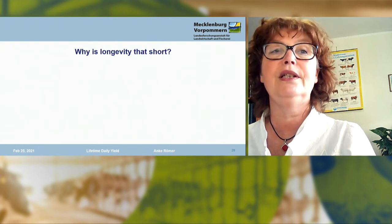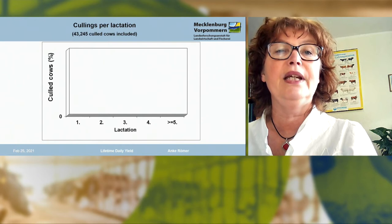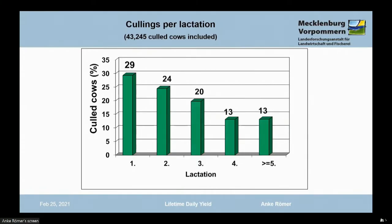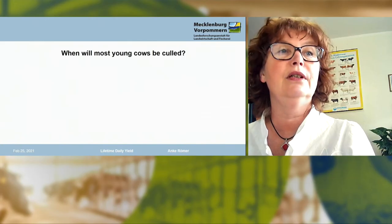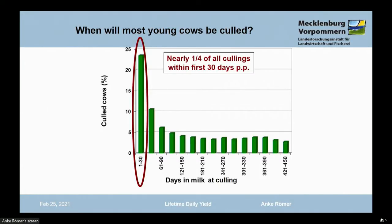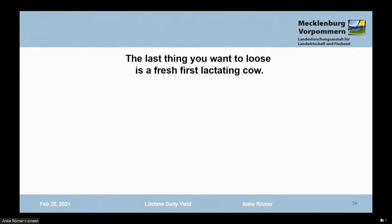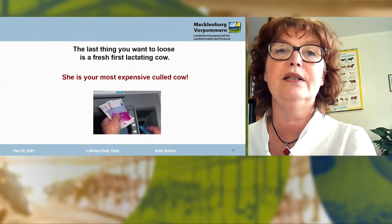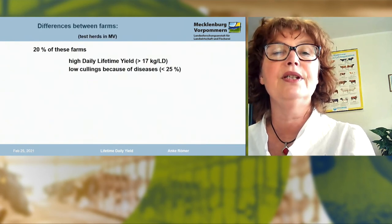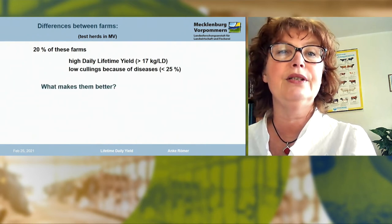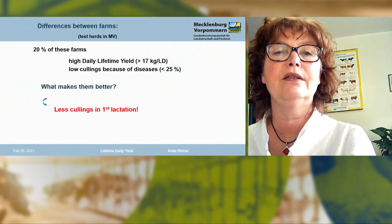But why is longevity so short? We calculated percentages of culled cows per lactation without sales. Surprisingly, most culled cows were first-lactating cows. Nearly 25% of cullings were fresh cows. The last thing you want to lose is a fresh cow in first lactation — she is your most expensive culled cow. We found only one big difference between efficient farms and all others: efficient farms had less cullings in first lactation.